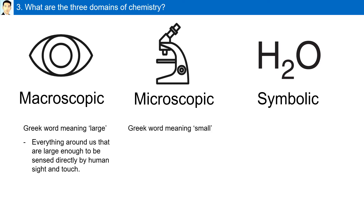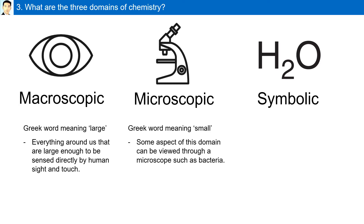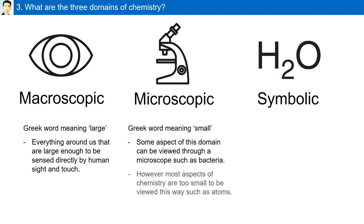Microscopic is from the Greek word meaning small. Some aspects of this domain can be viewed through a microscope, such as bacteria. However, most aspects of chemistry are too small to be viewed this way, such as atoms.